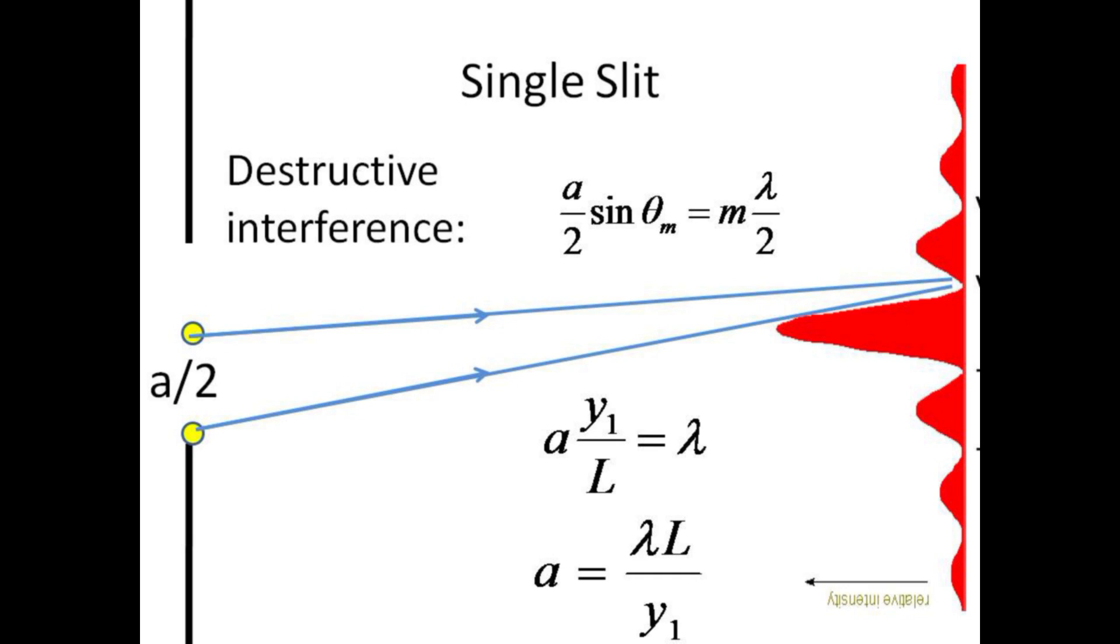Light passing through a single slit interferes with itself in a process called diffraction. Minima in the intensity pattern occur when there is destructive interference between sources separated by only half the slit width. Thus, a over two sine θ equals m λ over two. The twos cancel and the angle is small, so we find that the slit width a is the product of λ times L divided by y.